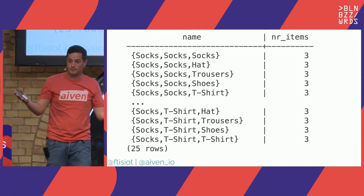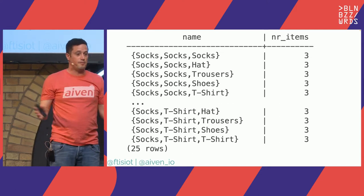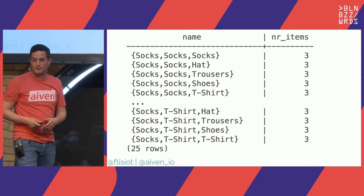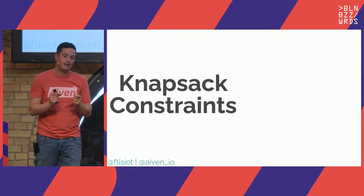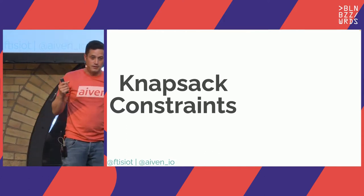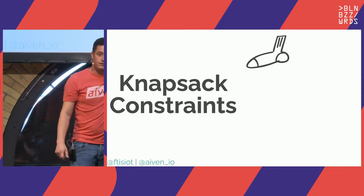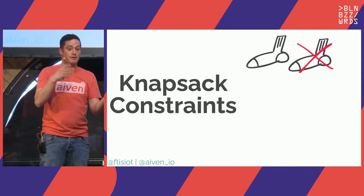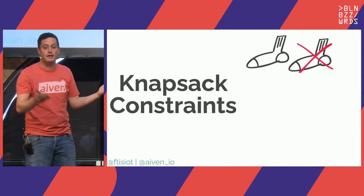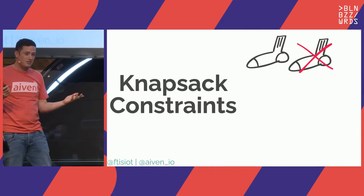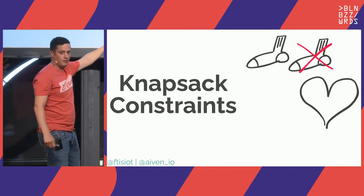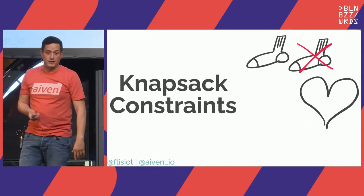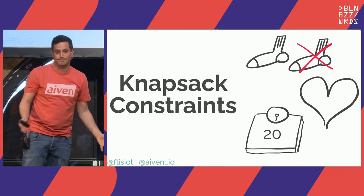Did we solve the knapsack problem? No. Because we didn't add any of the knapsack constraints. First: if we choose socks, we cannot choose socks again — we cannot pick the same item twice. Second, we didn't calculate what was the total value of the solution. Third, and the real constraint: weight — we cannot go over 20.